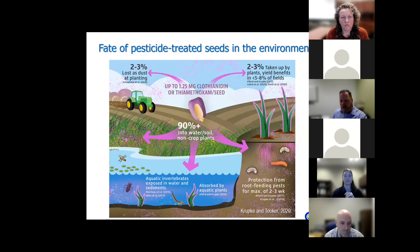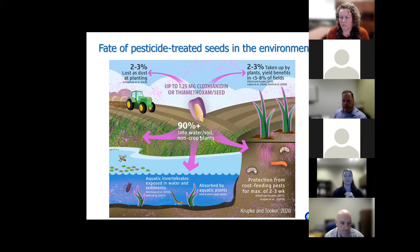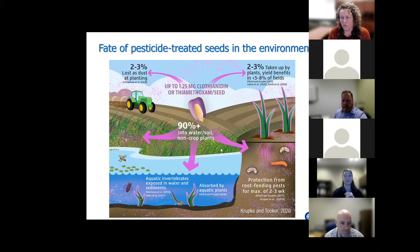This excerpt from Kripke and Tooker's 2020 paper provides an infographic of the fate of pesticide-treated seeds in the environment, specifically looking at corn coated with either clothianidin or thiamethoxam. They suggest about 2 to 3% is taken up by the target plant—the corn crop itself; 2 to 3% is lost as dust during planting; and 90% or more can then move into adjacent waterways, soil, or other non-target areas such as non-crop plants, potentially leading to aquatic invertebrate exposure, exposure to insectivorous birds, and exposure to pollinators.